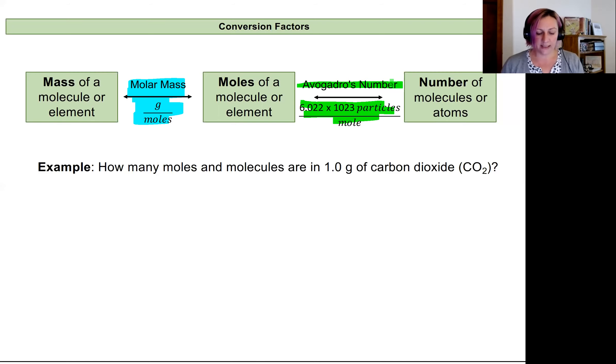So let's look at an example of how many moles and molecules are in 1.0 grams of carbon dioxide. We've already done a little bit of work with carbon dioxide, so we know its molar mass, which is helpful. So let's start out with what's been given to us, our 1.0 grams. I'm going to write that out here, 1.0 grams of my carbon dioxide.